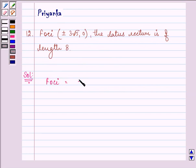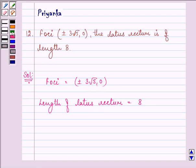Foci is given as plus minus 3 root 5, 0 and the length of latus rectum is given as 8. Now we know that since the Foci lies on the x-axis,